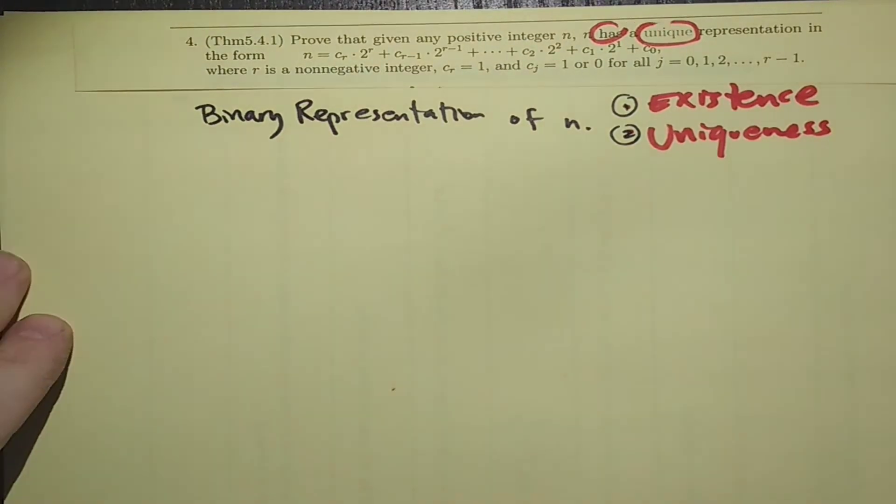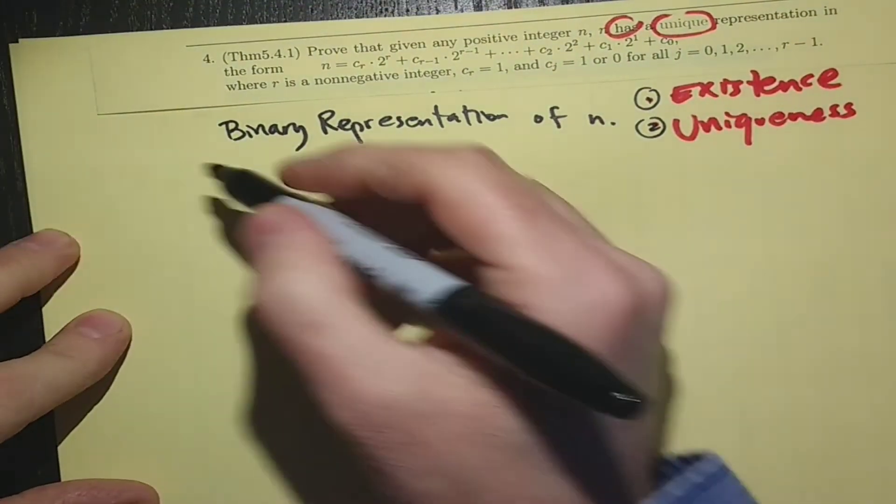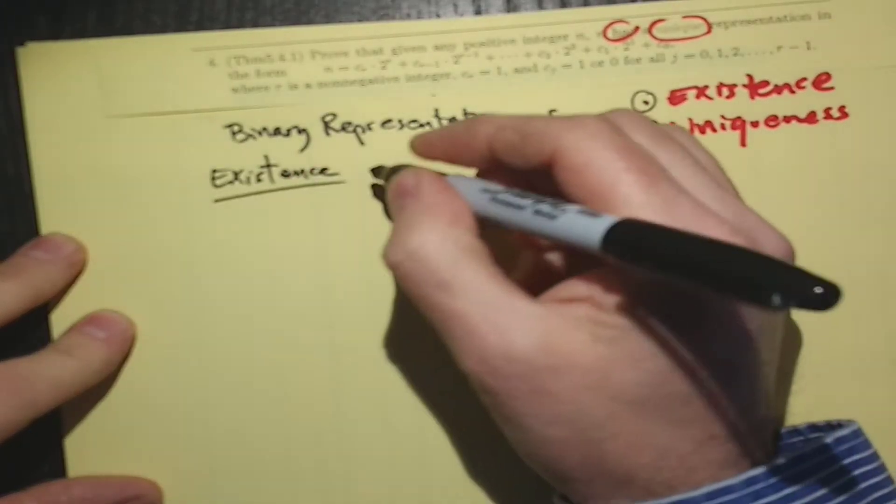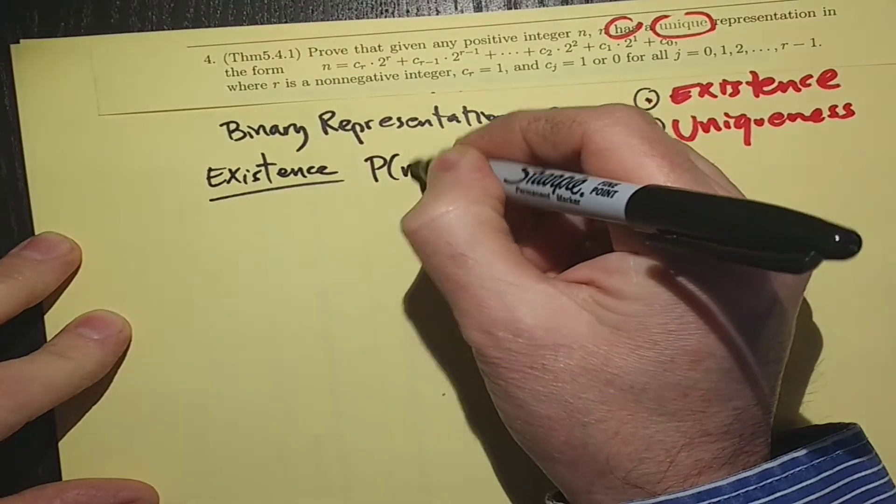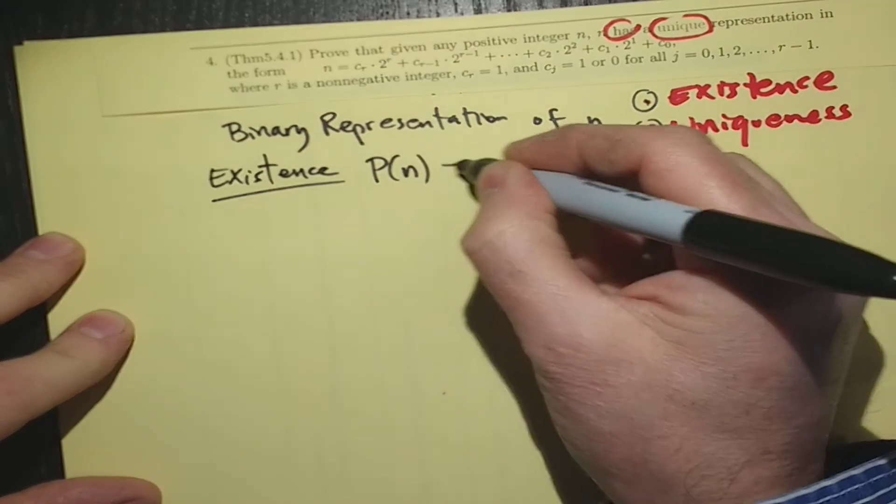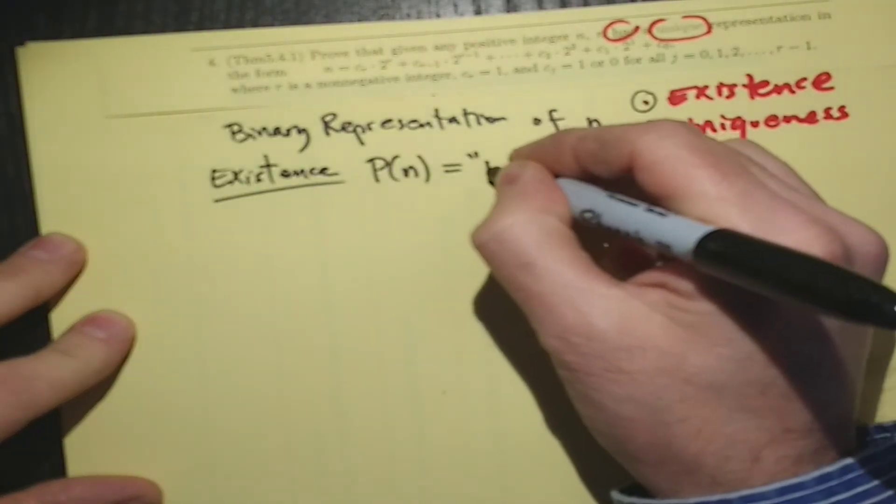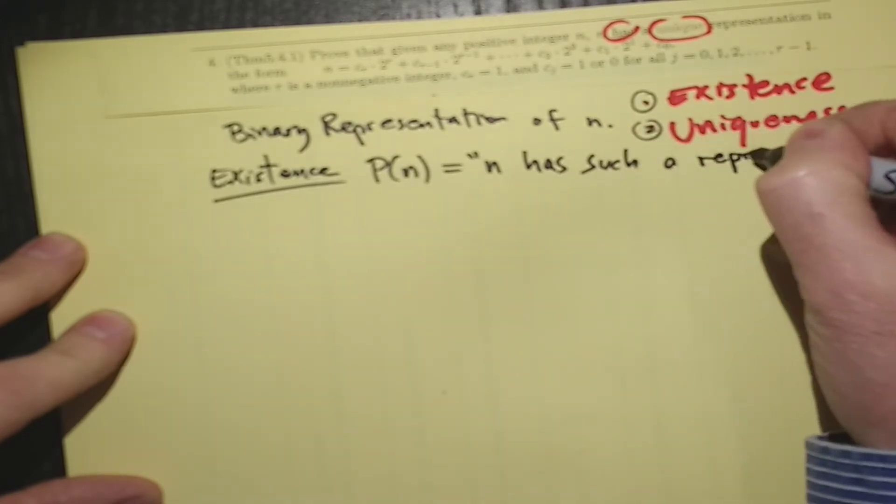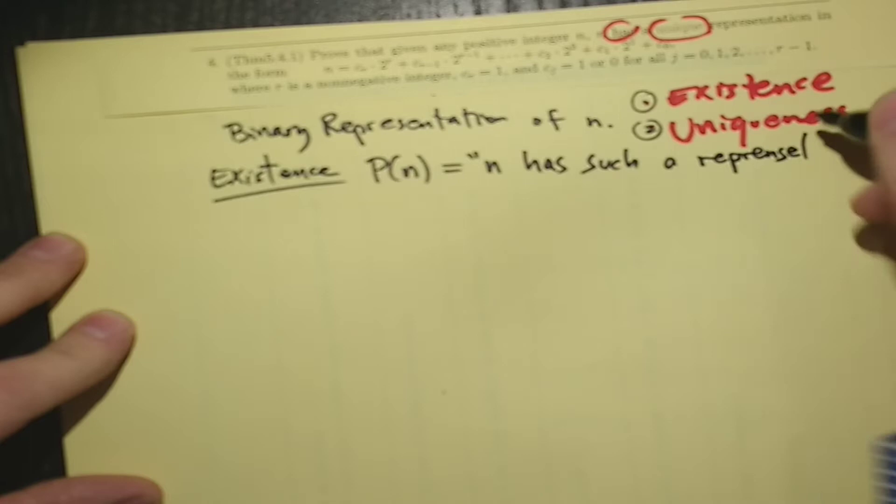For existence, I'll use strong induction. And my statement P(n) is going to be the statement n has such a representation.